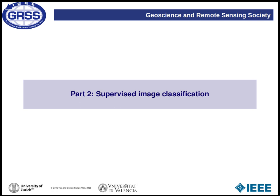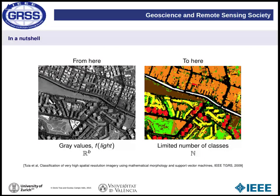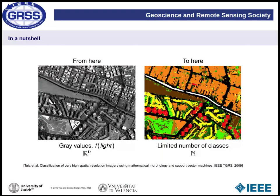Let's talk about supervised image classification. The goal is to start from a multi-band grayscale image with B bands and simplify the data from the space of real numbers into a limited number of thematic classes — perhaps 5, 10, or 15 — that mean something for the analyst. In the example shown, we classify the image into buildings, towers, grassland, bare soil, and streets. It is really a product of image simplification useful to an analyst.